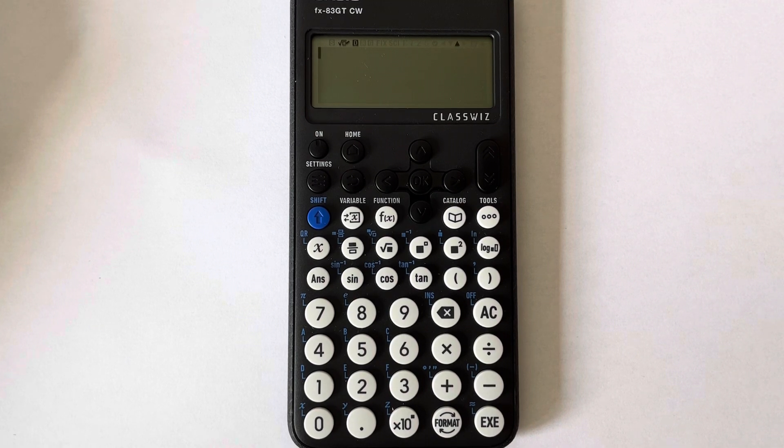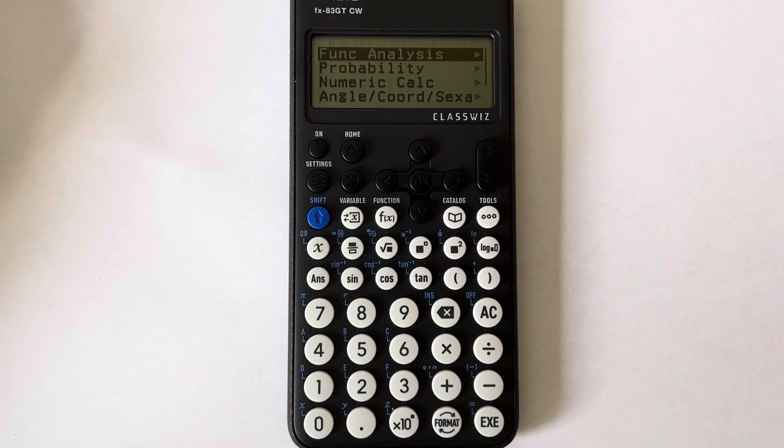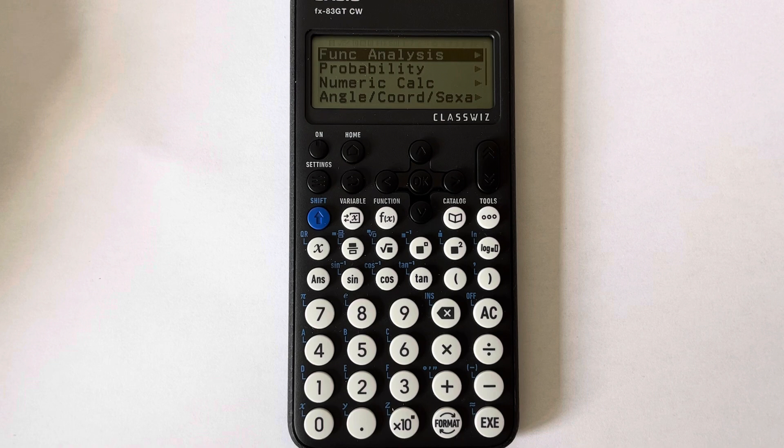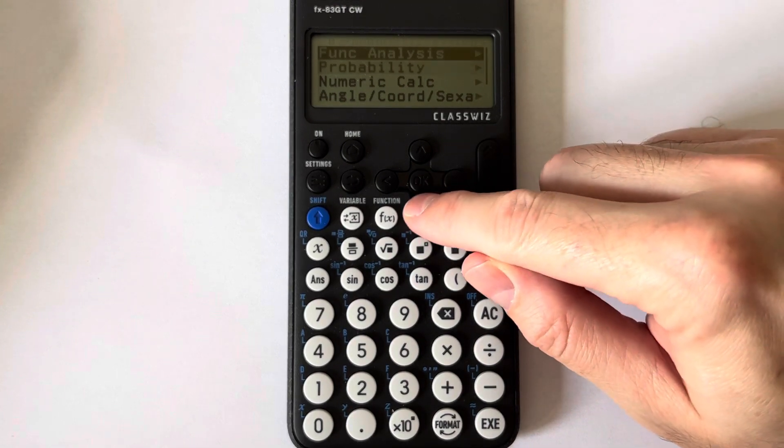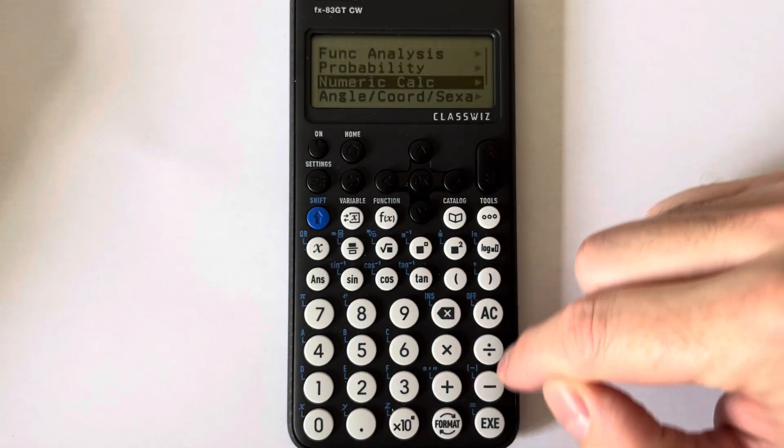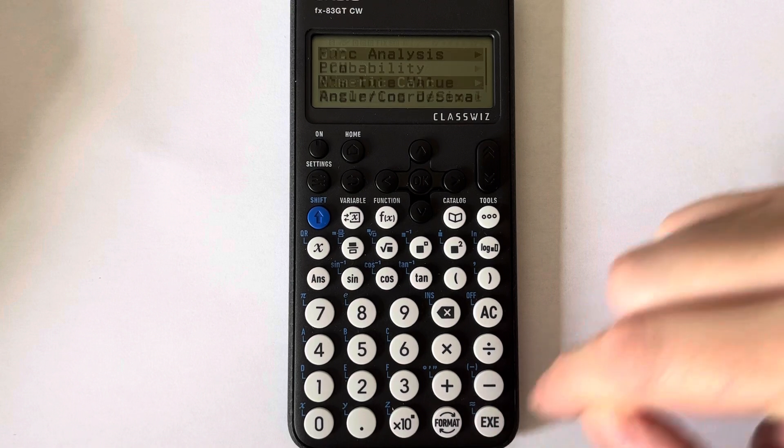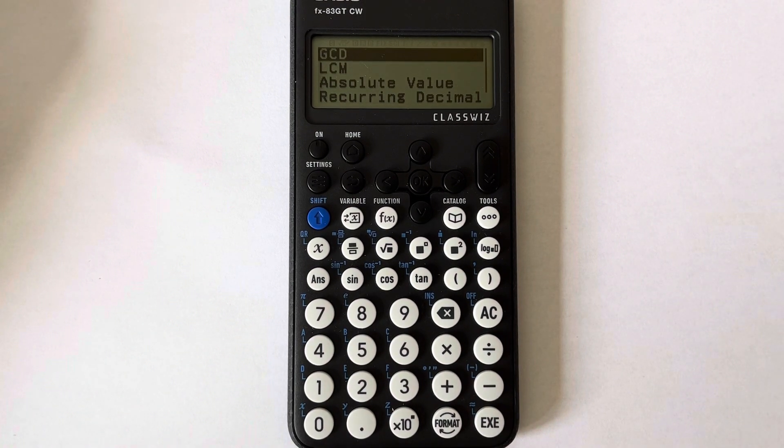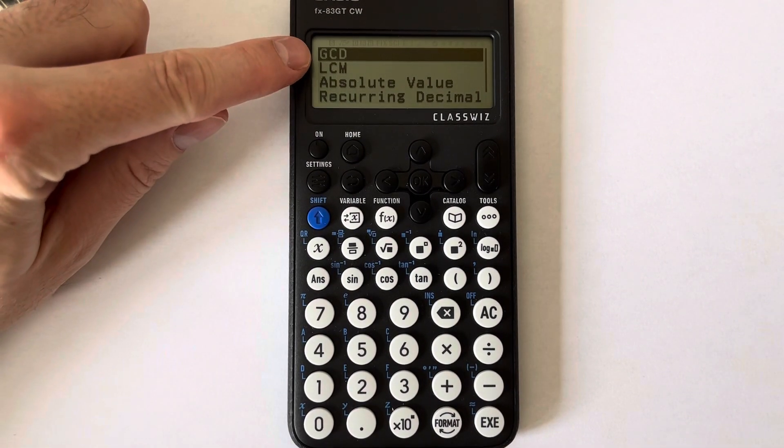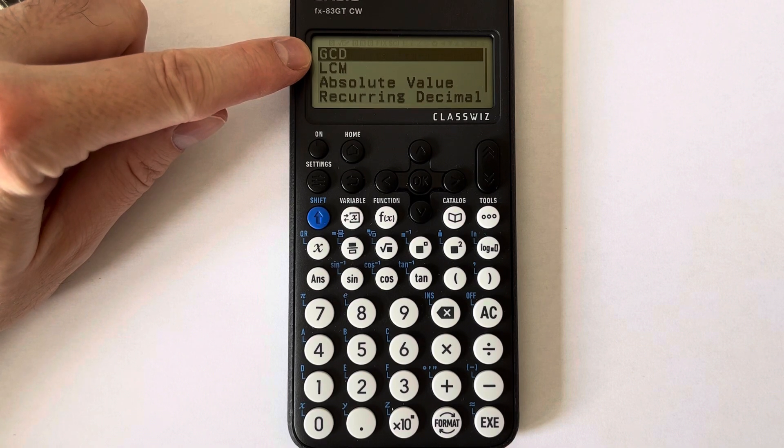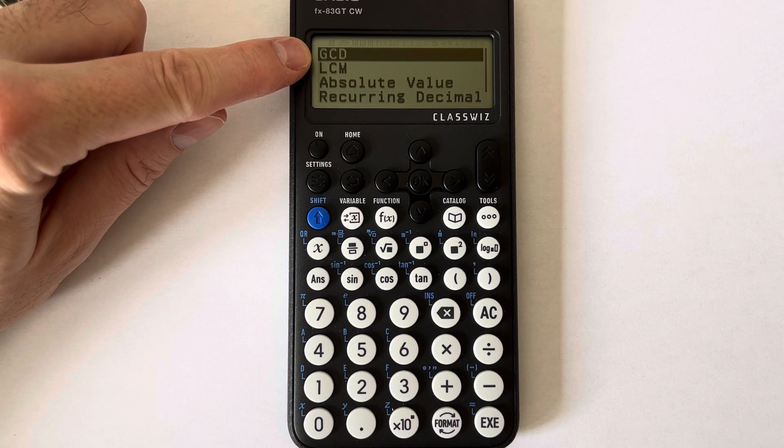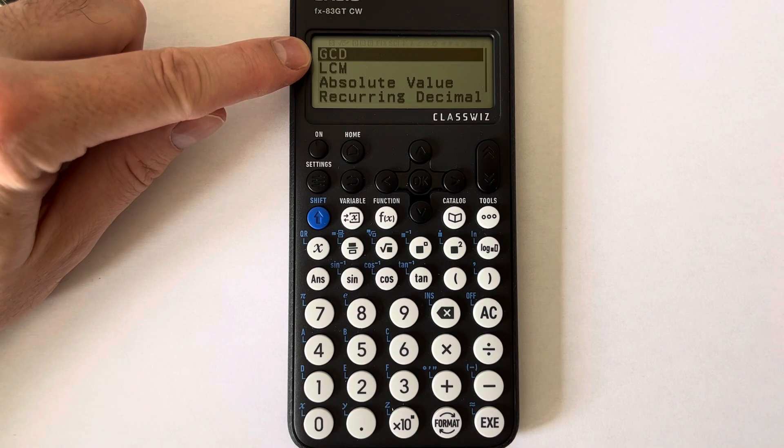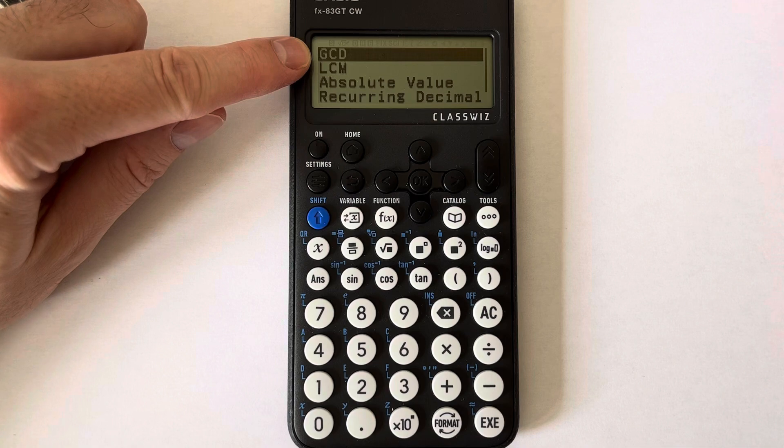To do this, we press catalog and then go down to numeric calc. Press the execute key. The highest common factor is at the top here where it says gcd. GCD stands for greatest common divisor, which is the same as highest common factor.